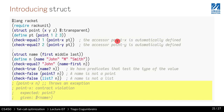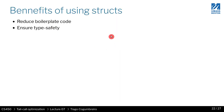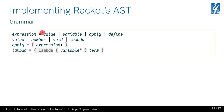The benefits are obvious: you reduce boilerplate code, you ensure type safety, and if you give your code to a third party they cannot fabricate values of your data type. As an exercise, I want us to implement Racket's AST that we've learned so far in terms of structs — a struct for each AST node: a struct for a value, one for void, one for lambda, one for function call, and one for function declaration.